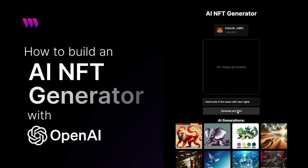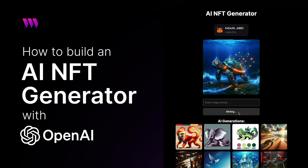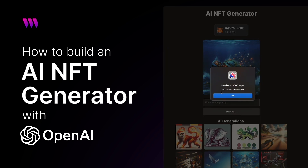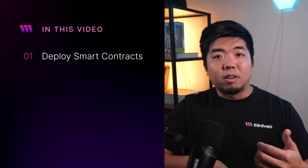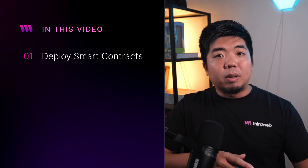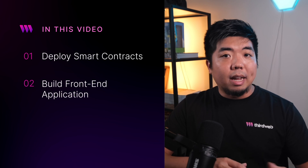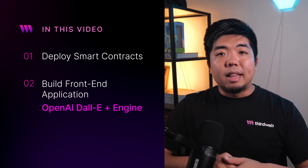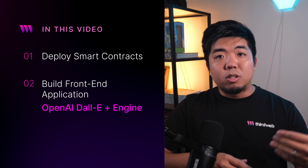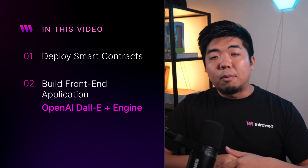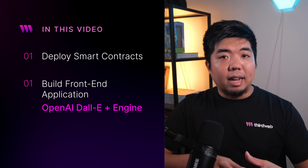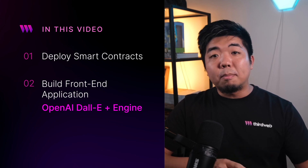In today's tutorial we're going to be building our very own AI NFT generator using OpenAI's DALL-E to generate AI images and then thirdweb's Engine to mint those images as NFTs. We'll first deploy our NFT smart contract, then build out the front-end application with OpenAI's DALL-E image generator, and then use Engine - an HTTP server which allows us to call on-chain transactions - to generate AI images and mint them as NFTs.